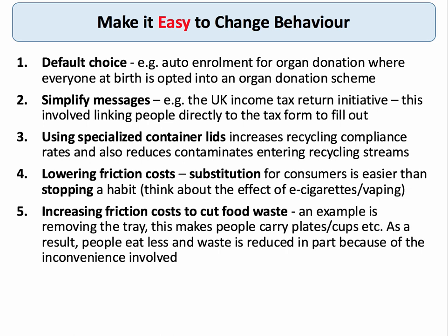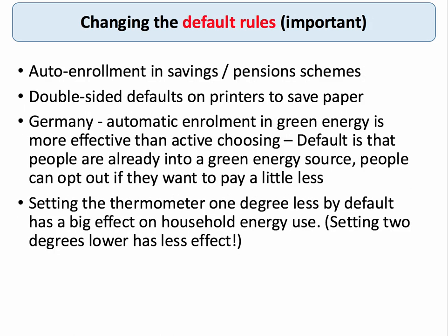Making it easier for people to give up smoking involves all kinds of nudges — from tax to regulation to advertising bans. But if you think about the effect of e-cigarettes and vaping, that is by some consent actually the most powerful current way in which people attempt to give up smoking conventional cigarettes. You can either lower the friction cost and make it easier to substitute to a better behaviour, or you can increase the friction cost — such as taking away the tray from restaurants so people eat less and create less waste. If you get an exam question on behavioral economics, changing the default is very often the most effective way of changing behaviour quite rapidly.